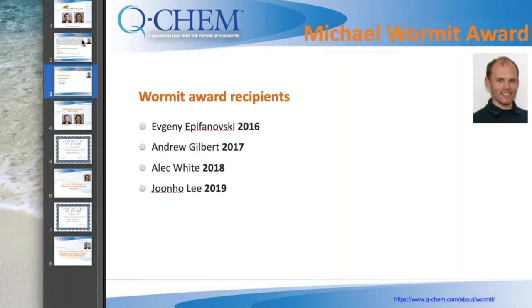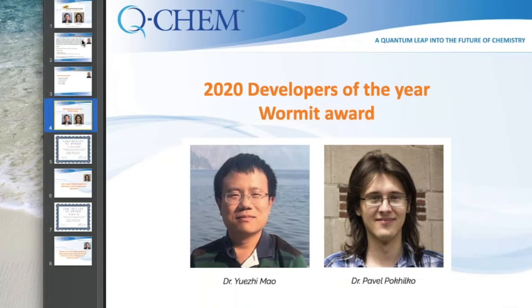The first award was given in San Diego in 2016 to Evgeny Epifanovsky, in 2017 to Andrew Gilbert, 2018 Alec White, and to Yunho Lee in 2019. Today the fifth Michael Wormit developer of the year award will be presented. We have received several outstanding nominations. The board appointed an international selection committee. The winner of the 2020 developer of the year Wormit awards are Dr. Yuji Mao and Dr. Pavel Pokhilko.